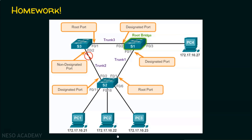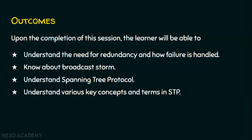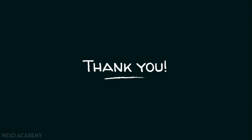Before we conclude, let's see a homework question. Root ports, designated ports, and non-designated ports are depicted in a scenario along with the root bridge. Analyze whether these port assignments are correct or incorrect — type yes in the comment section if everything is perfect, or no if something is not perfect. I hope now you understand the need for redundancy, how failure is handled, what a broadcast storm is, and the Spanning Tree Protocol along with key concepts such as port cost, root bridge, designated port, and root port. Thank you for watching.